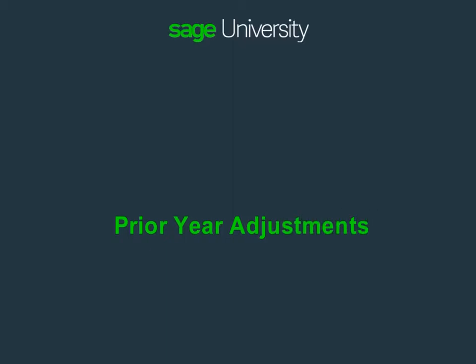You just closed your fiscal year in General Ledger, but now you have to record some more entries. What do you do? Not a problem. Watch this lesson and we'll show you how to record these as prior year adjustments.